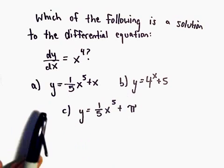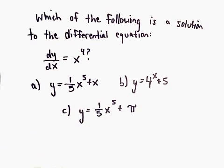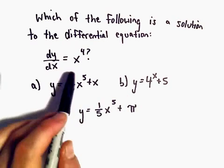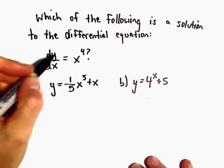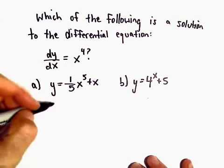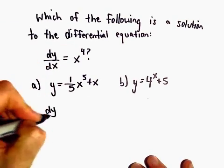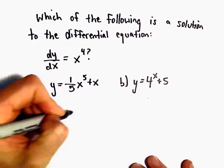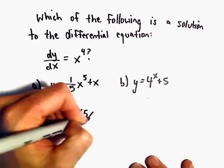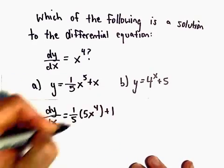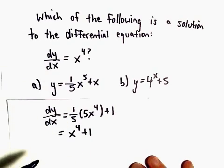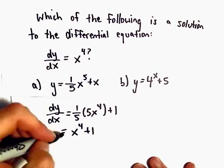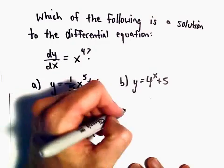We want to know which one of these three functions — a, b, or c — are solutions to this differential equation. Maybe there's more than one solution. All this really says is which derivative gives us just x to the fourth. So we can check part a: dy/dx will give us 1/5 times 5x to the fourth plus 1, which leaves us with x to the fourth plus 1. But that's certainly not just x to the fourth, so part a is not our solution.